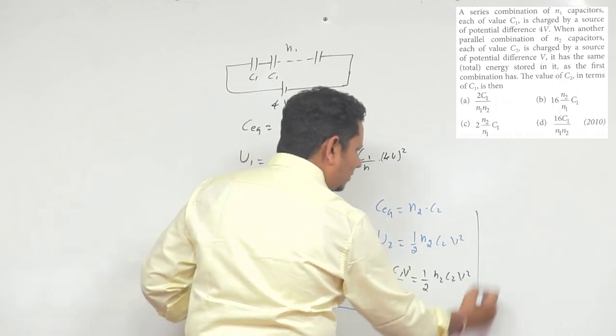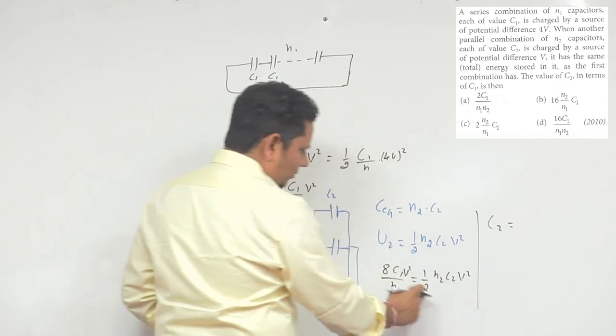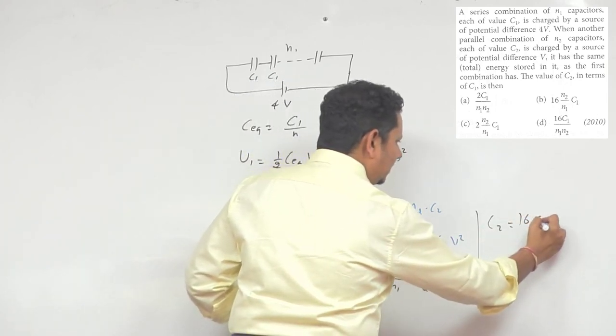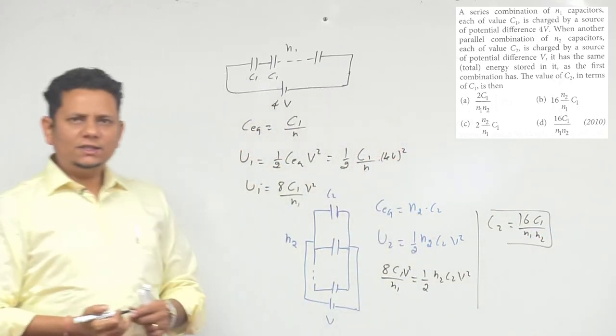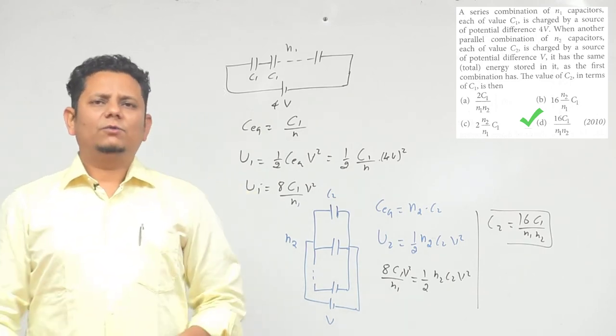So the value of C2 - the final result will be: C2 equals... dividing this, the 2 will multiply up, giving us 16C1 divided by N1N2. So this is our final answer. Based on this, we can say that option D, 16C1 divided by N1N2, would be the right answer.